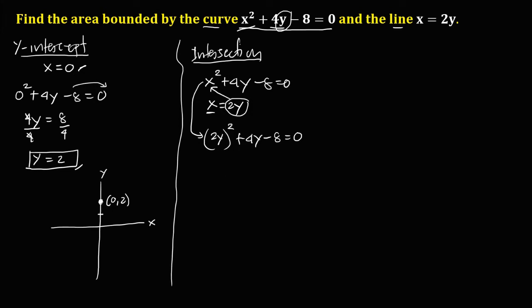Simplify: (2y)² gives 4y squared, so we have 4y squared plus 4y minus 8 equals 0. Since every term is divisible by 4, divide through by 4 to get y squared plus y minus 2 equals 0.